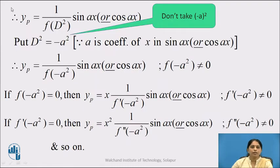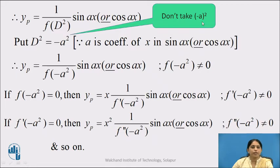Once you write yp as 1 upon f(D²) into sin x or cos x, replace D² by minus a², where a is the coefficient of x in sin x or cos x. While substituting, don't take minus a bracket squared — it should be minus of a². Therefore we get yp as 1 upon f(−a²) into sin x or cos x, provided that the denominator is nonzero.